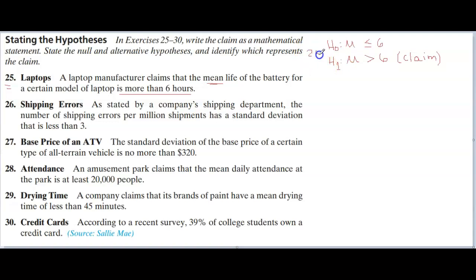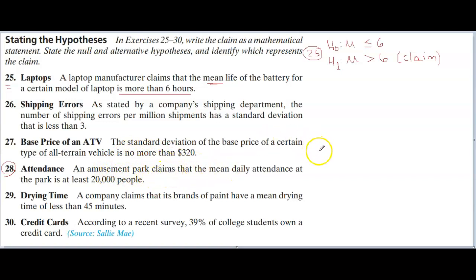Let's do problem number 28. It says an amusement park claims that the mean daily attendance at the park is at least 20,000 people. The keyword here is 'claims' — whatever comes next is what I need to underline and translate. They're claiming that the mean daily attendance is at least 20,000 people, so I underline that as the original claim.